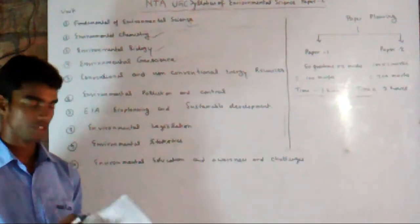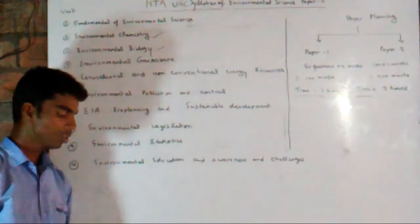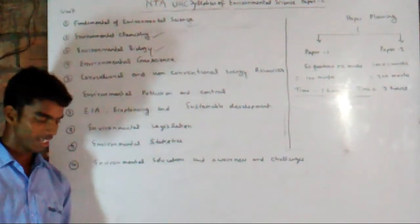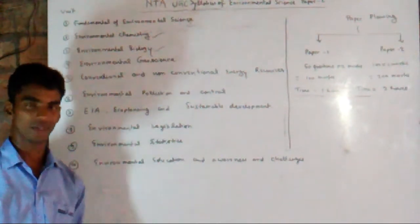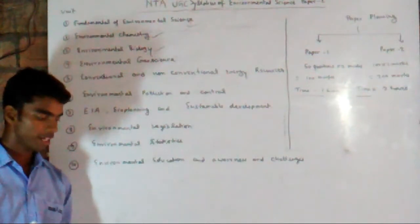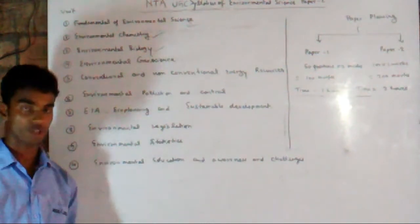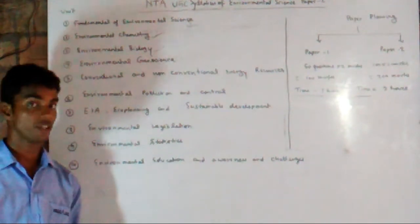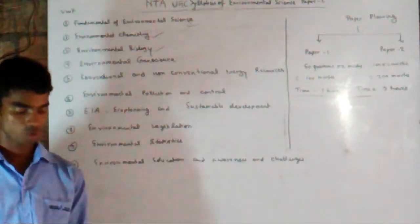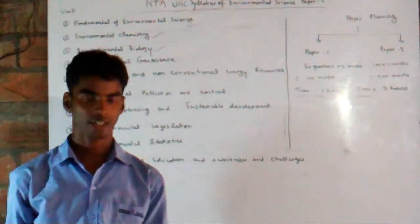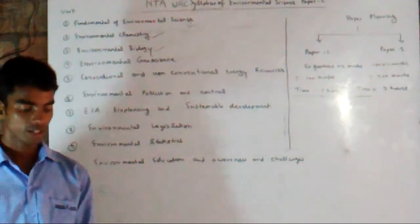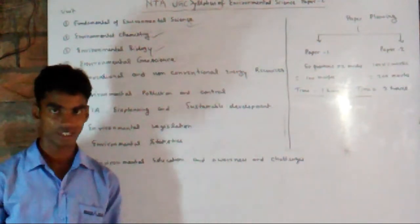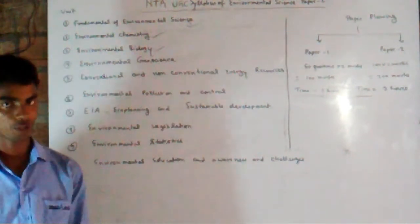This unit will also include environmental biotechnology fundamentals such as vermiculture and biofertilizer technology. The next unit is environmental geoscience, which covers fundamental concepts like the earth and biosphere, earth's processes, geological hazards, mineral resources, water resources, and environmental geochemistry.